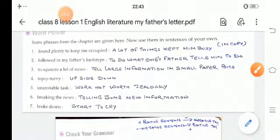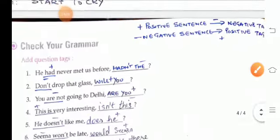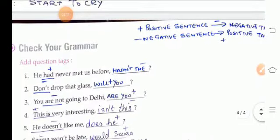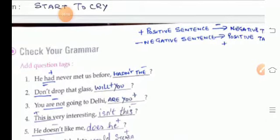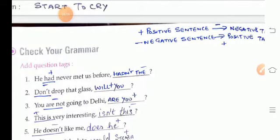Now we will move to check the grammar. Here, add question tags. He had never met us before, had he? Don't drop that glass, will you? You are not going to Delhi, are you? This is very interesting, isn't it? He doesn't like me, does he?